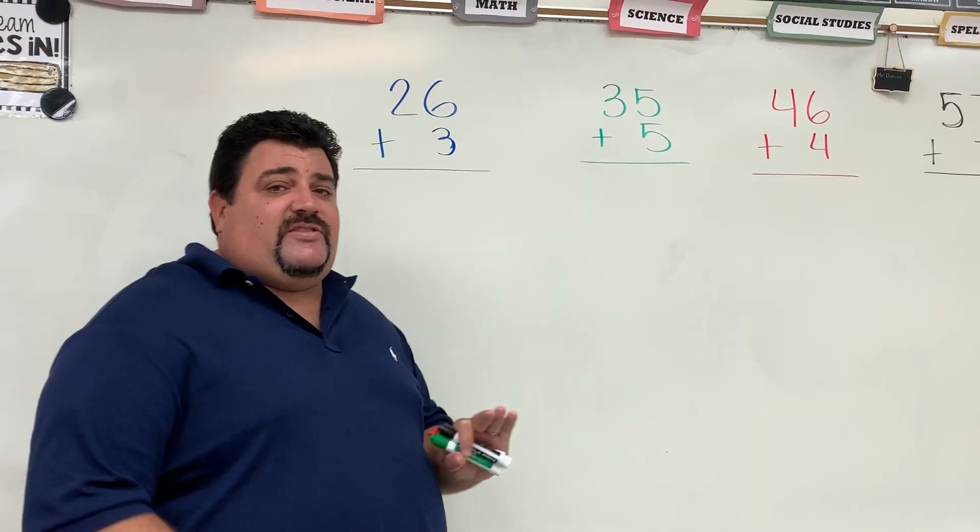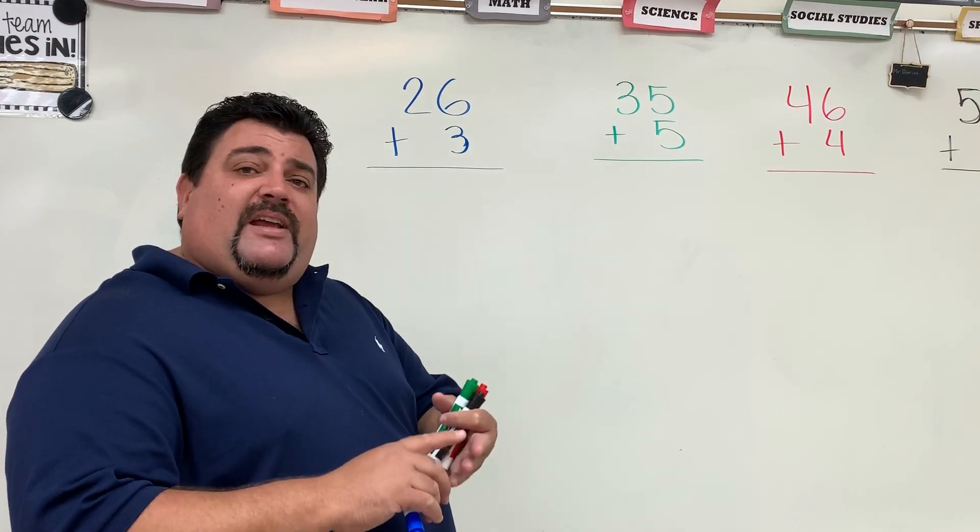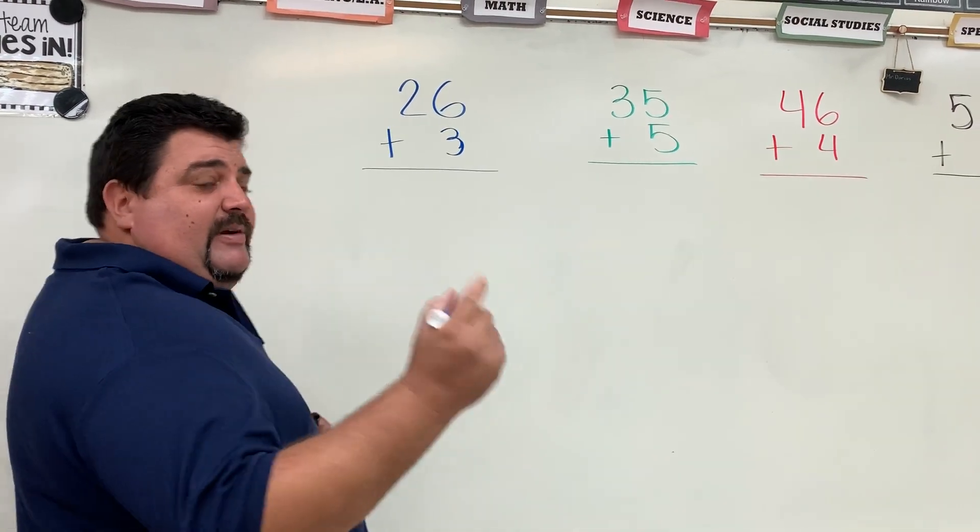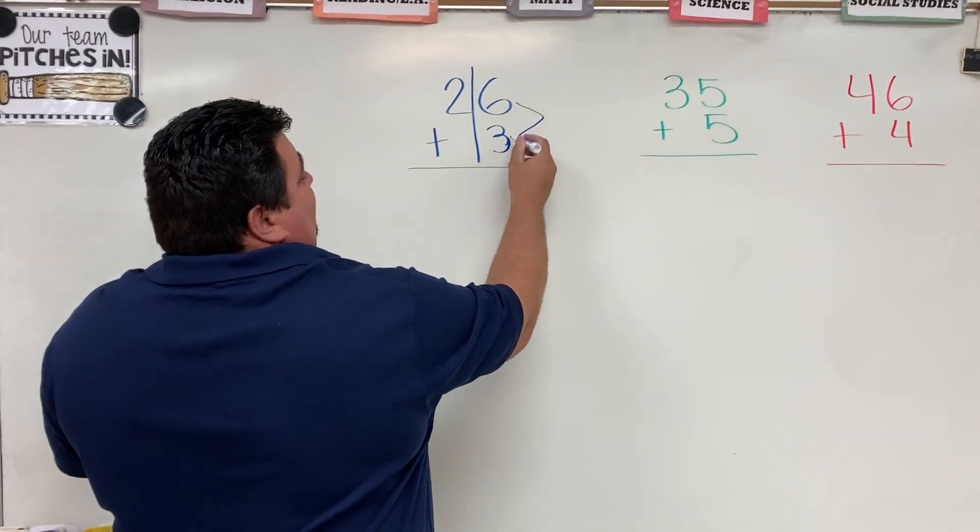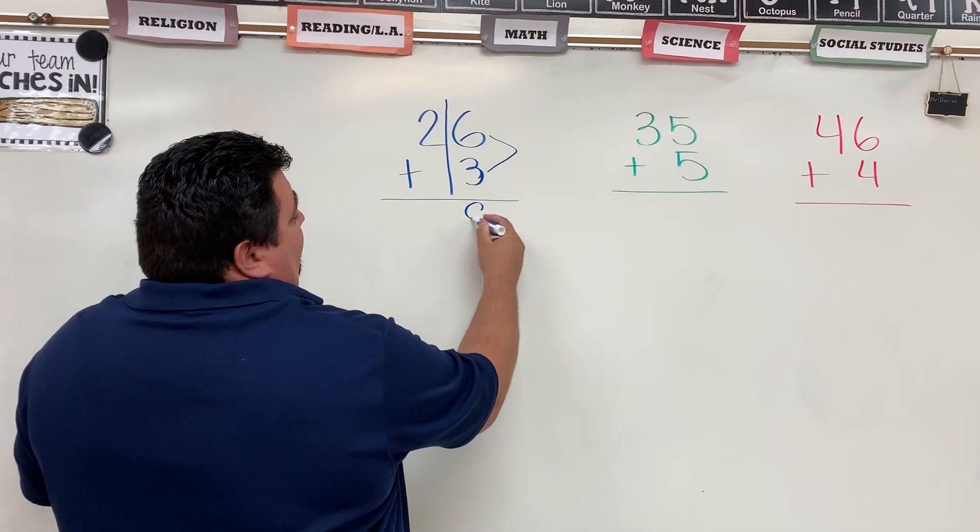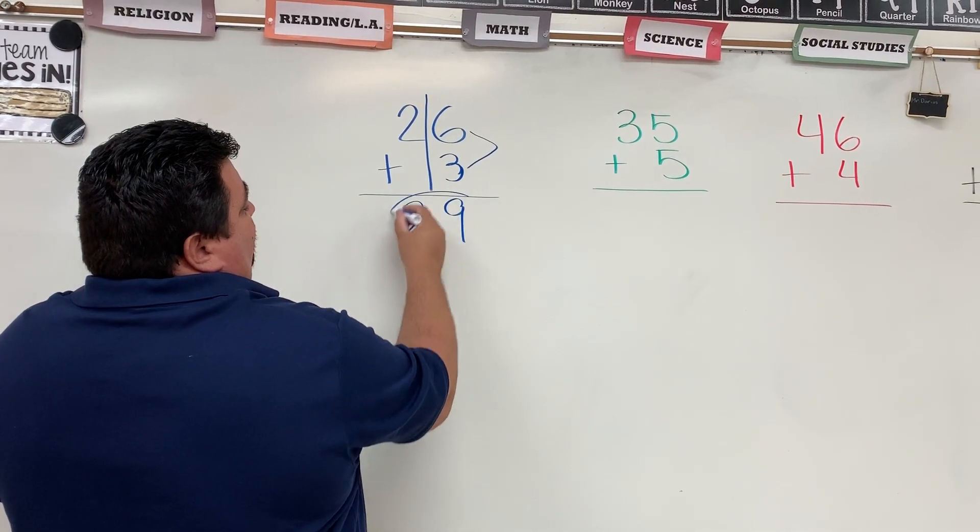The first problem I'm going to show you is the same one that we've always done. You guys have done phenomenal. Some of you know how to do two, three, and four-digit addition. First thing we've got to do is always draw the line, get our numbers in order. Six plus three is nine. Two plus zero, two. Answer's 29.